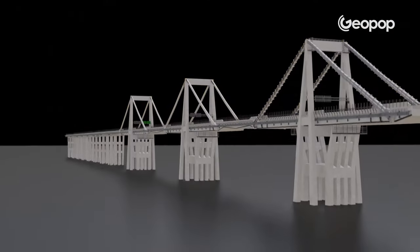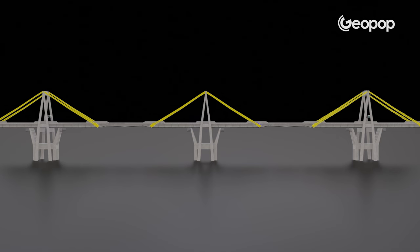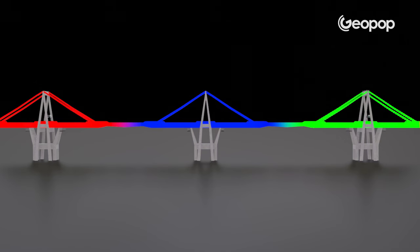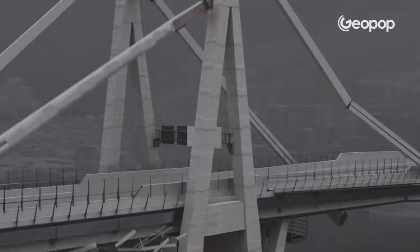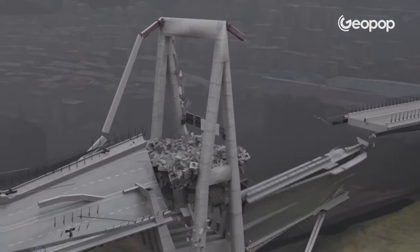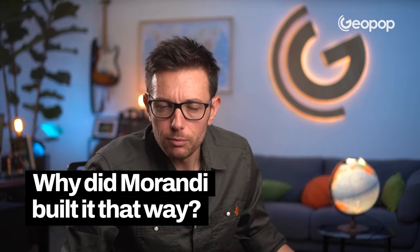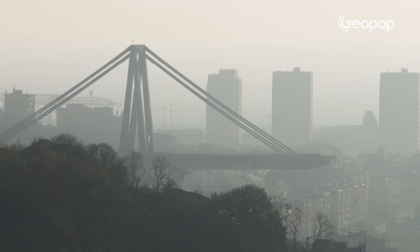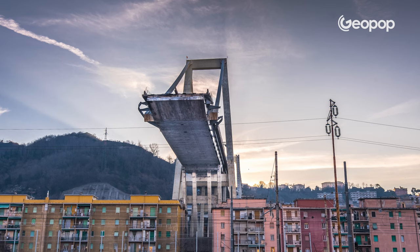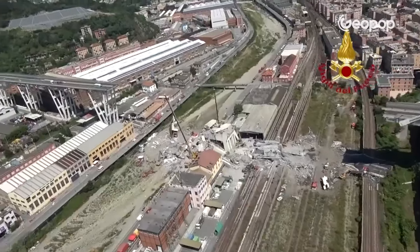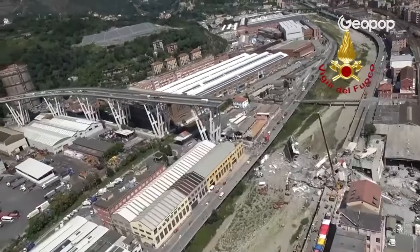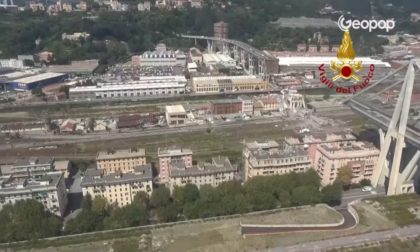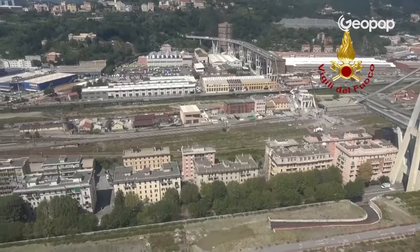There were three pylons, and each stack was separate from the perspective of the loads. It was not a coincidence that only pylon 9 collapsed while the other two remained standing. Why did Morandi build such a bridge? It was for a practical necessity. Under the bridge there was the city — houses, a river, warehouses, the railway. It was necessary to cross the valley with as few pylons as possible.